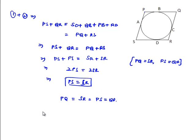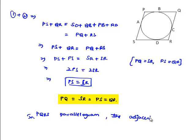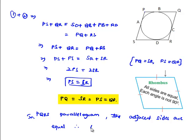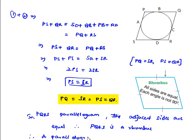Since PS equals QR (opposite sides of parallelogram) and PQ equals SR, substituting gives PQ equals QR equals RS equals PS. Therefore all four sides are equal, and we can conclude that a parallelogram circumscribing a circle is a rhombus.